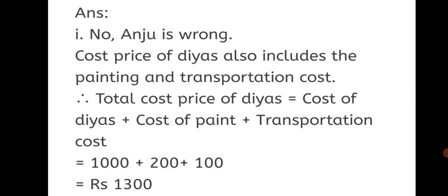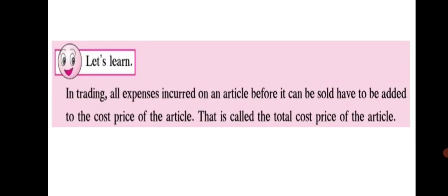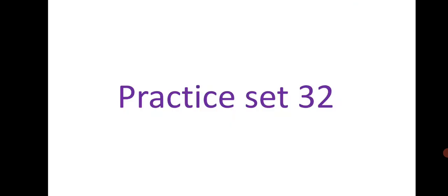So Rs. 1300 is the total cost price. Accordingly, profit = selling price − cost price = 2000 − 1300 = Rs. 700 profit. Total cost price must be found first in sums where there is additional cost on the product. In trading, all expenses incurred on an article before it can be sold have to be added to the cost price. That is called the total cost price of the article.